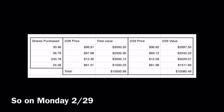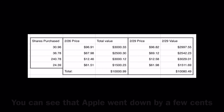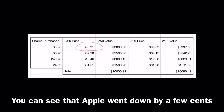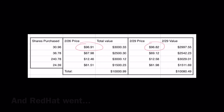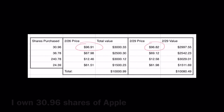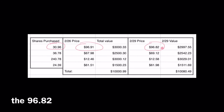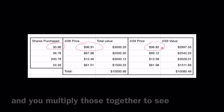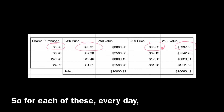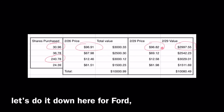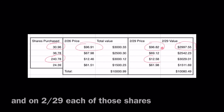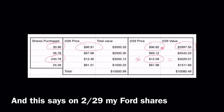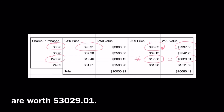On Monday, 2/29, I went back and checked the prices again and they had fluctuated a little bit. Apple went down by a few cents and Red Hat went up by quite a bit. To see the value the next day, I take my 30.96 shares of Apple, multiply by the price on 2/29 — $96.82 — to see what it's worth. For Ford, I bought 240.78 shares, and on 2/29 each share was worth $12.58, so my Ford shares were worth $3,029.01.